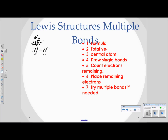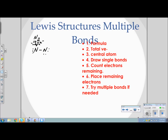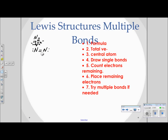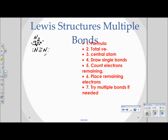To fix the problem, one nitrogen shares a lone pair by moving it into the bond. That gives one nitrogen eight electrons, but the other still only has six. So the second nitrogen also shares a lone pair into the bond. Now both nitrogens have eight electrons each, forming a triple bond. This is the correct Lewis structure for N2.